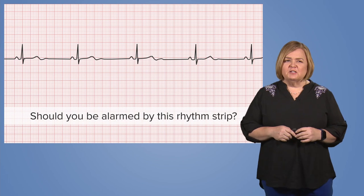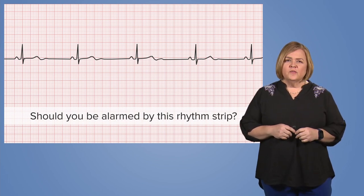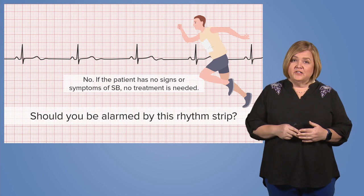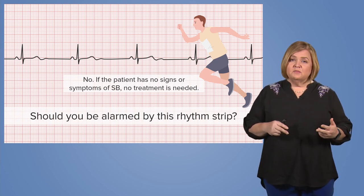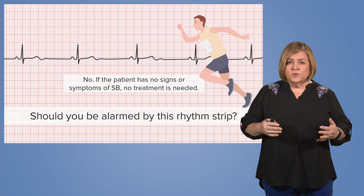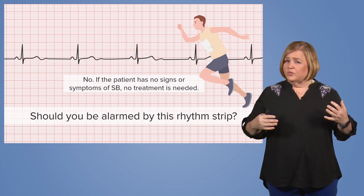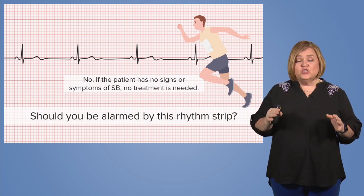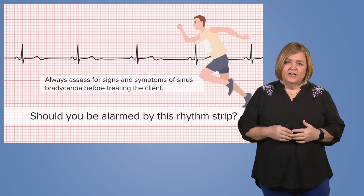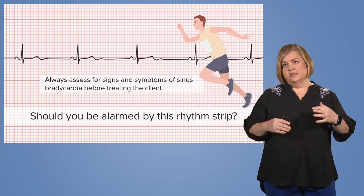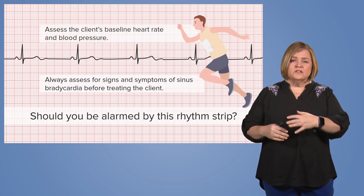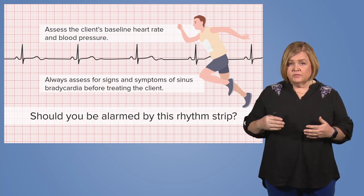Let's go back to that patient we talked about in the beginning — remember the marathoner? If this was his rhythm strip, would I be alarmed? No, most likely I would not, because he's awake, alert, talking to me, and I would always check a blood pressure. However, if his blood pressure is normal for him, along with the trend he normally runs, and he has no complaints of dizziness or weakness, he's doing fine — he's just incredibly fit with excellent cardiovascular health. However, if a 64-year-old tells me they're dizzy, weak, and lightheaded, and they have this rhythm with a low blood pressure, we would consider them symptomatic and they're going to need some type of treatment.